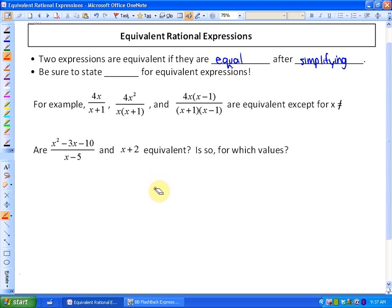So for rational expressions, it's the same case. Another thing to be careful of is that for rational expressions, in the case of variables, we have to make sure that we state non-permissible values for equivalent expressions, which we've looked at in a previous lesson.